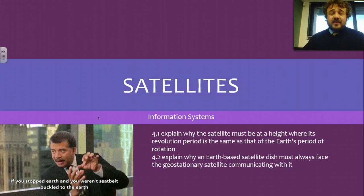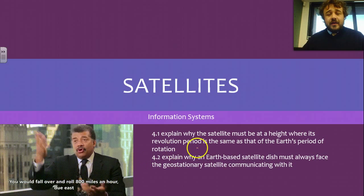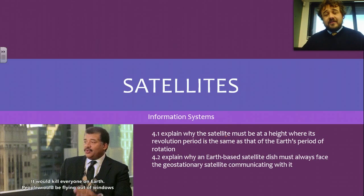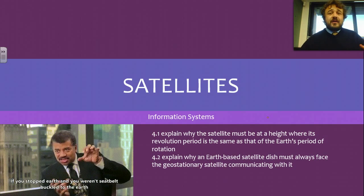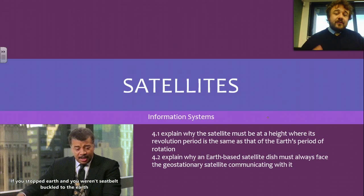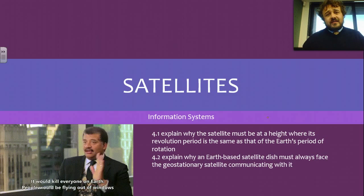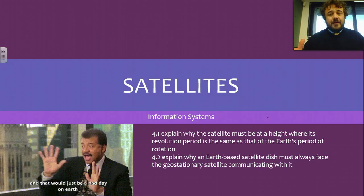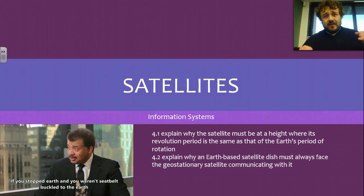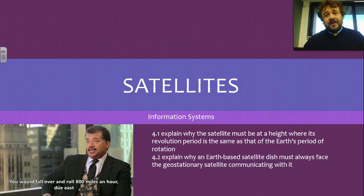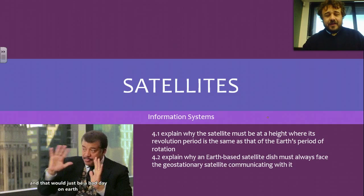Today we're going to talk about satellites, and basically we're going to explain why the satellite has to be at the height where it is, with its period of revolution. Period is the amount of time it takes for something to repeat itself. We're also going to talk about why the satellite dish must be pointing at the satellite when it's communicating with it, though that only matters in one direction.